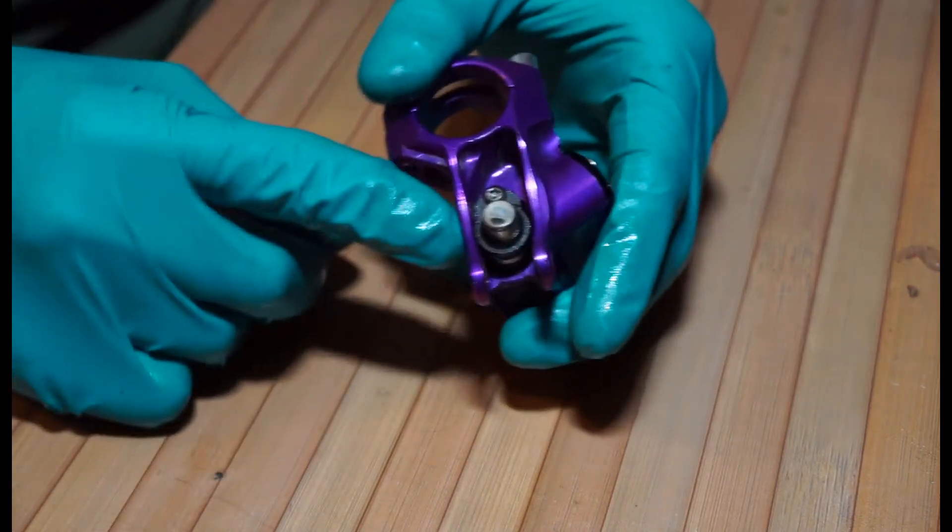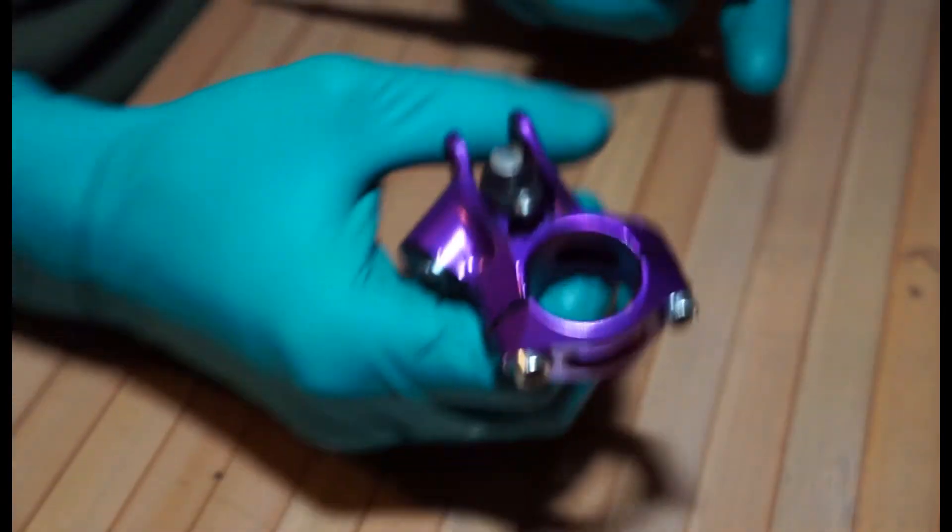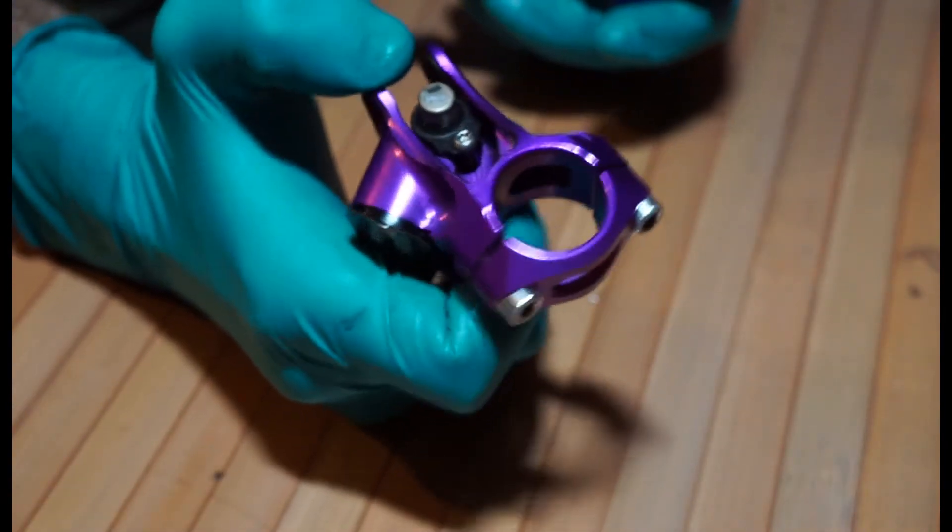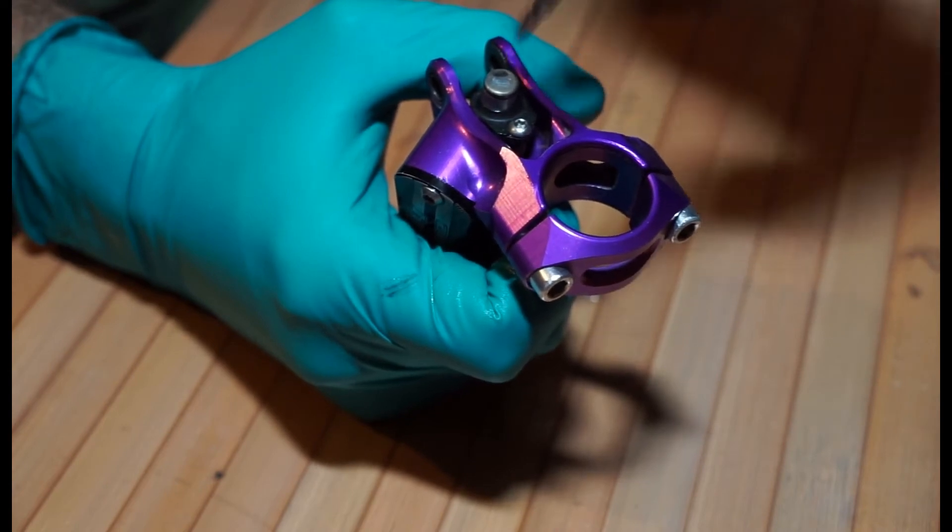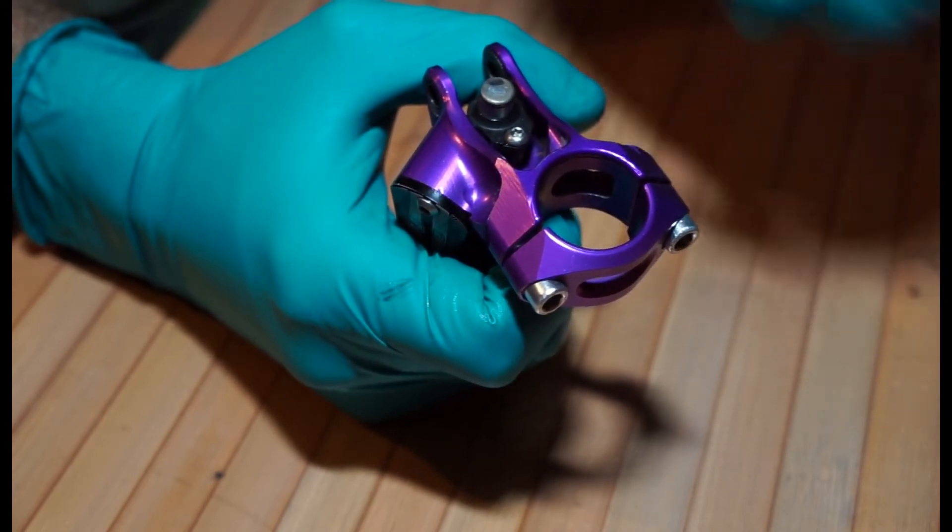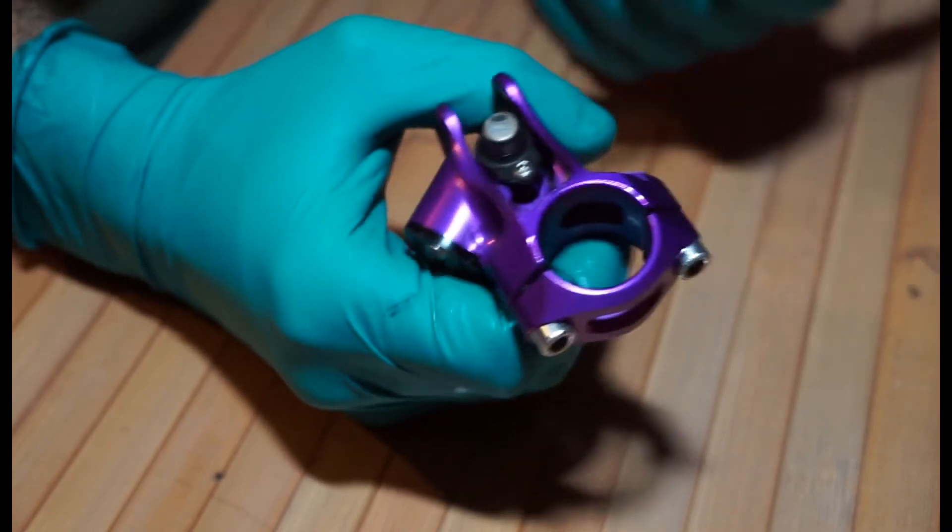Then what you're going to do is push on the piston and tighten this bolt at the same time. It's the reverse order of how you took it out. The reason you want to push on this piston is you can actually bolt this down and the plate will be slightly bent outwards and it won't sit properly. That's just the force of the piston coming back at you.